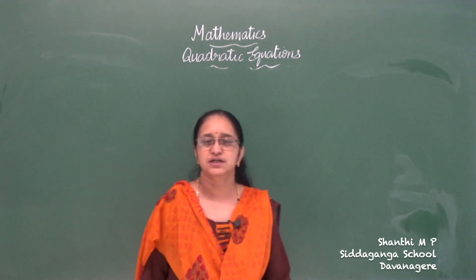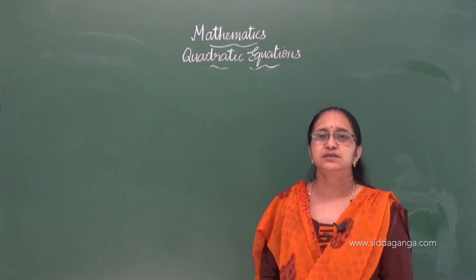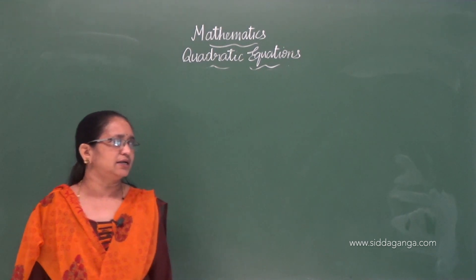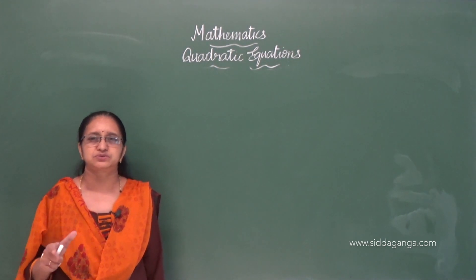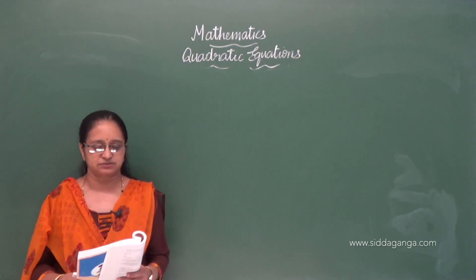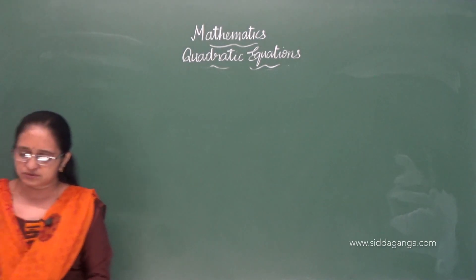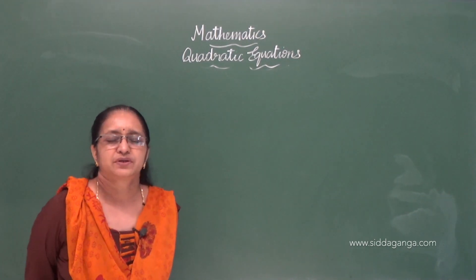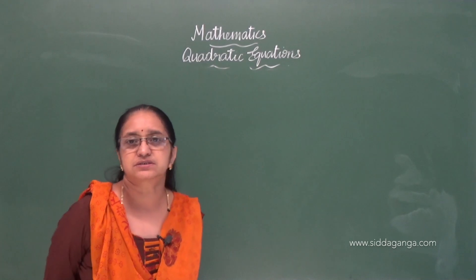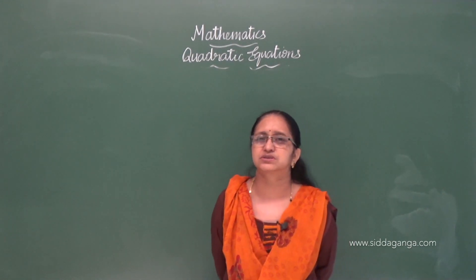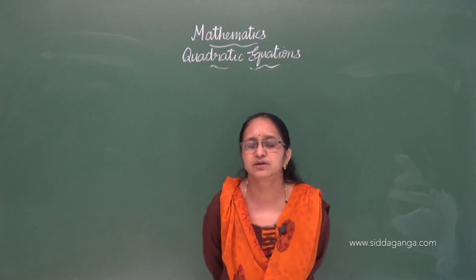Hello students, let us continue with the next main in exercise 4.4. Find the value of k for each of the following quadratic equations so that they have two equal roots. They have given the condition that the quadratic equation has two equal roots and they are asking you to find out the value of k. In the previous class we had discussed what is the meaning of equal roots, what is the meaning of two distinct roots and no real roots — three conditions.